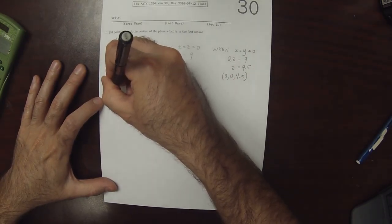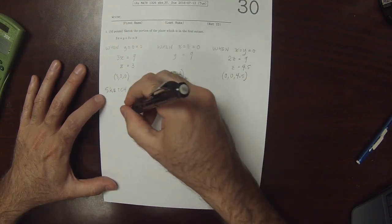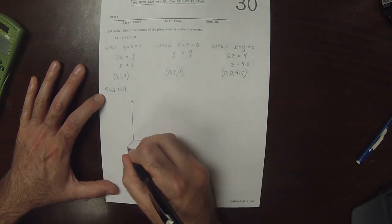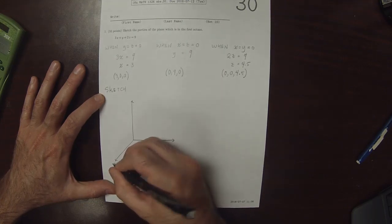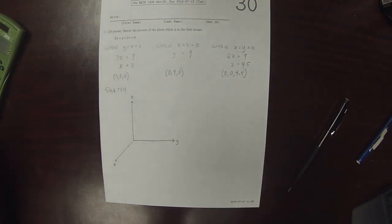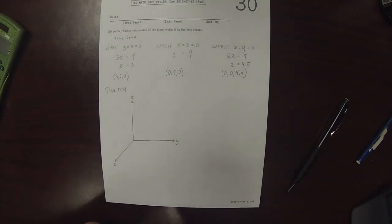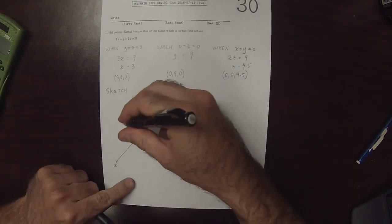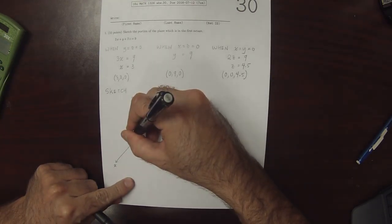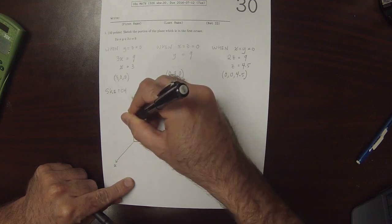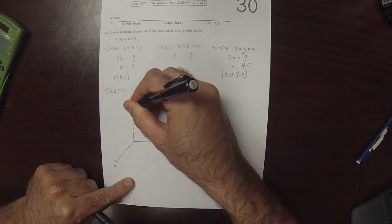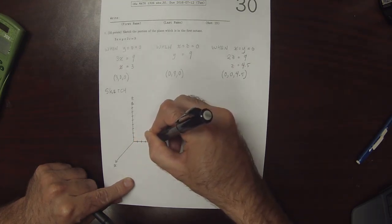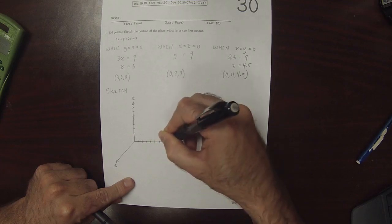So, sketch of this situation in the standard view x, y, z. Making a scale: 1, 2, 3, 4, 5, 6, 7, 8, 9 on each axis.